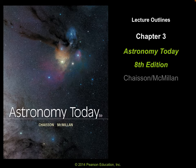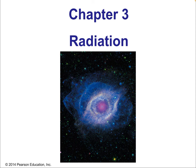Hello and welcome to the lecture on chapter three of astronomy today. We're going to be talking about radiation in this chapter. Radiation is such an important part of what astronomers do, not because we're talking about radiation that causes mutations or nuclear energy radiation or anything like that. Radiation here means light. It means all of something called the electromagnetic spectrum.